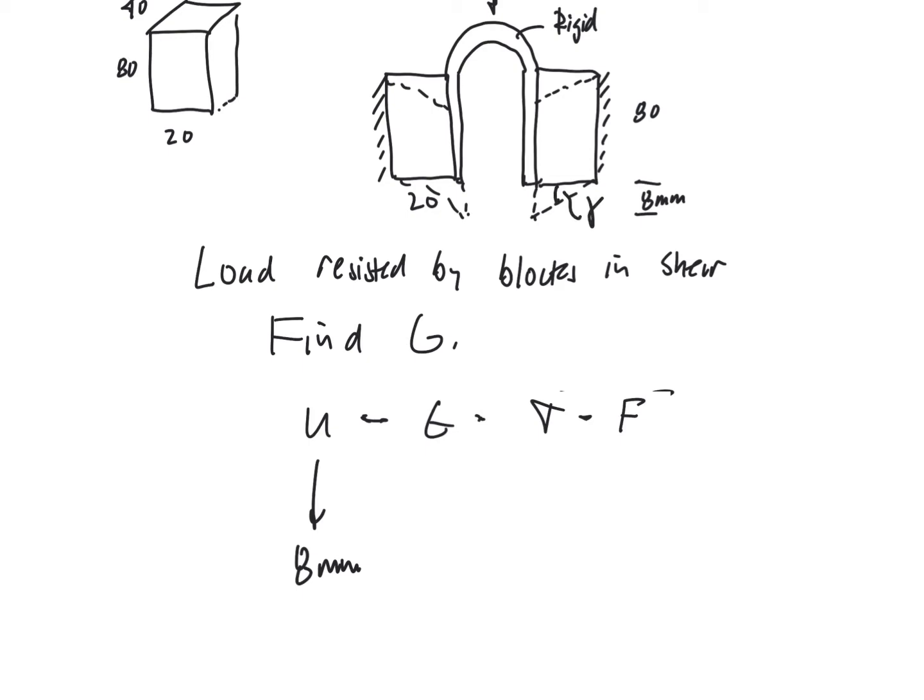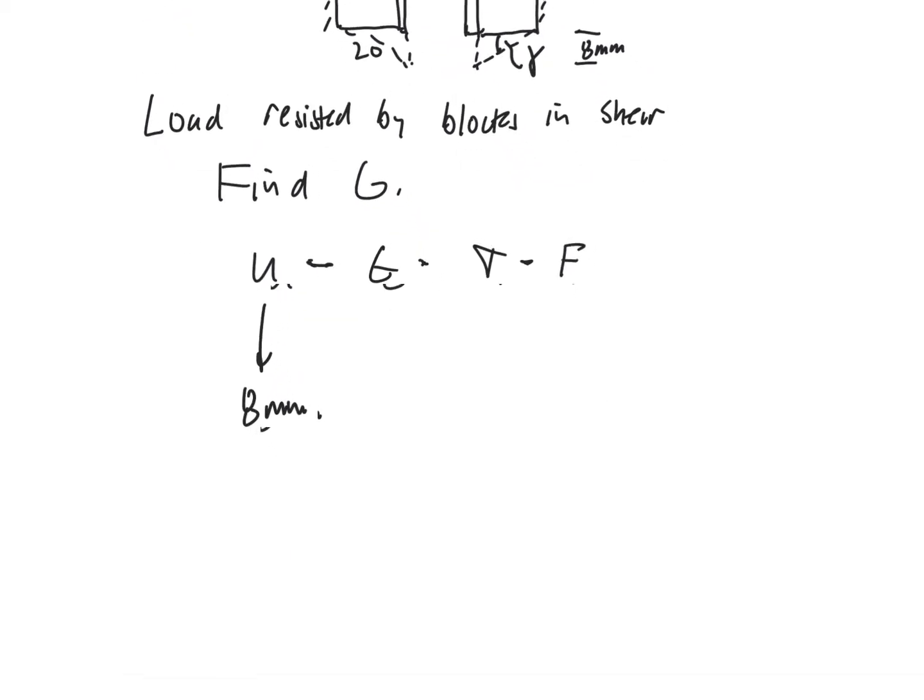That leads to not an epsilon now but a gamma. So what is that gamma going to be? Well the gamma is right in here, that's the angle. So that's the change in angle between two lines that were originally perpendicular. So that is the gamma that's generated by that. So the gamma that we have, again it looks like this and like this, this is 8 and this is 20 and that's going to be then gamma.